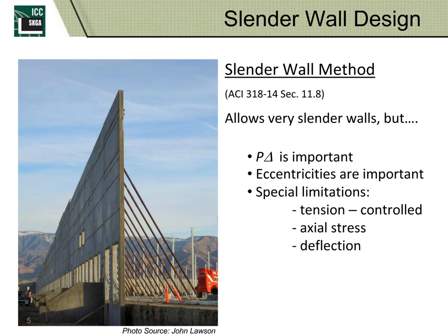Eccentricities are also important — when a roof load enters a slender wall not directly in line with the wall's axis, it creates a fairly large eccentric moment that must be addressed. Additionally, to prevent buckling, these walls must be tension-controlled. There is a limitation on axial stress to avoid instability, and deflection must be limited at service level events to prevent permanent deformations or bowing.